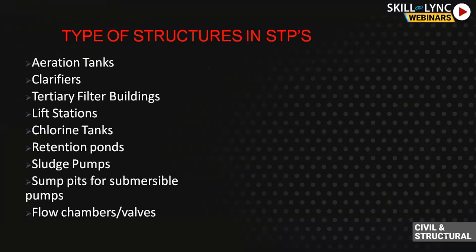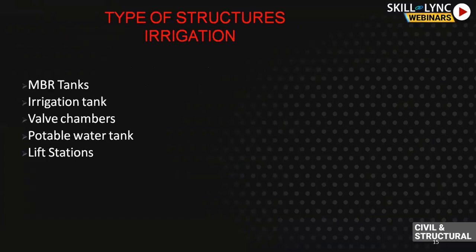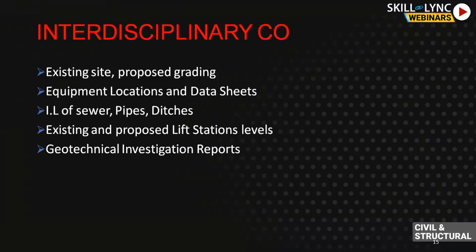There are many types of environmental structures in civil and structural engineering: aeration tanks, clarifiers, filter buildings, lift stations, fluoride tanks, retention ponds, storage pumps, flow chambers, and walls. For potable water, we have wall chambers, pump stations, irrigation tanks, and master distribution reservoir tanks.